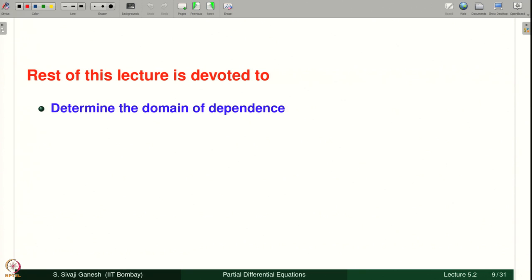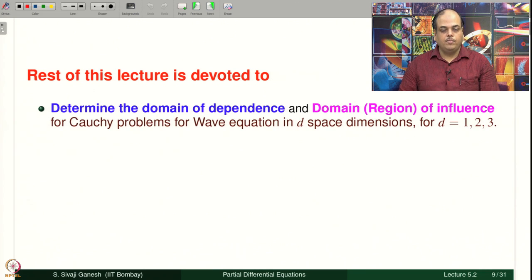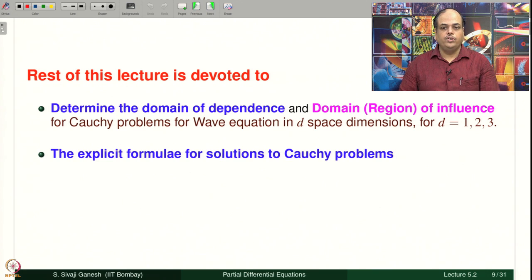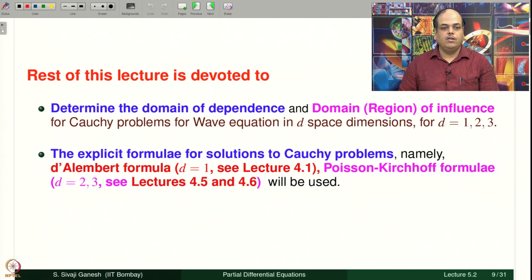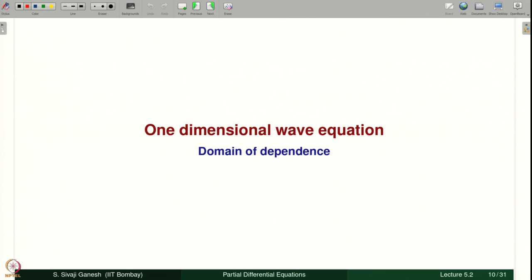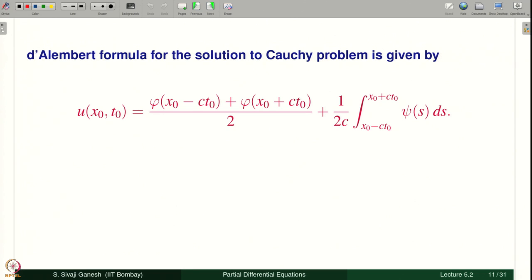The rest of this lecture determines the domain of dependence and domain of influence for Cauchy problems for the wave equation in d space dimensions, d = 1 to 3, using the explicit formulae: the D'Alembert formula for d = 1, and the Poisson-Kirchhoff formulae for d = 2 and 3. Let us move on to the one-dimensional wave equation and find the domain of dependence.